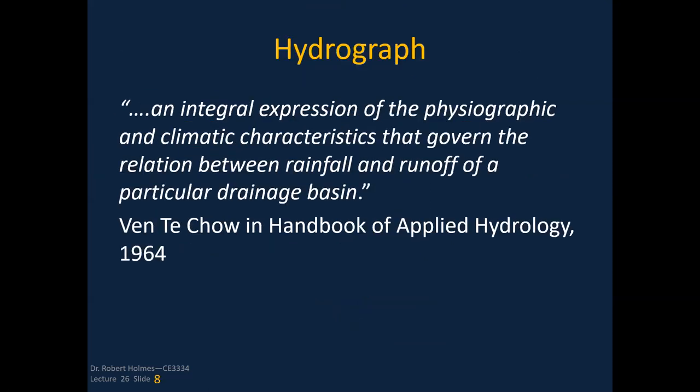Another definition by Ven Te Chow: a hydrograph is an integral expression of the physiographic and climatic characteristics that govern the relation between rainfall and runoff of a particular drainage basin.